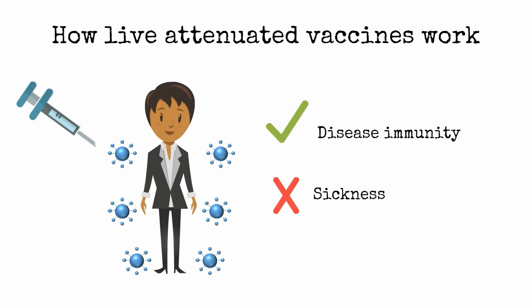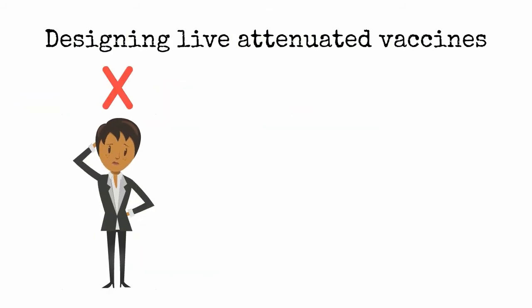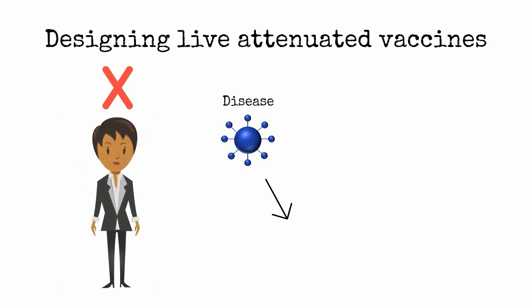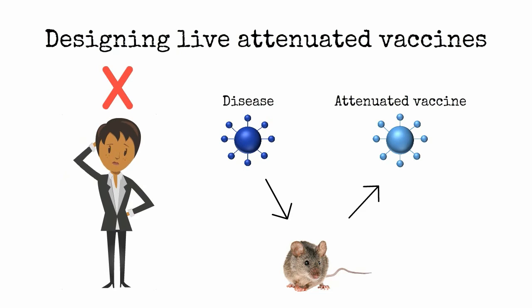Historically, they have been created by growing the disease virus in unfavorable environments such as high temperatures, novel hosts, or novel host cells. Adaptation to the new environments reduces viral growth rates in the natural host so that the vaccines impart immunity without causing disease symptoms.